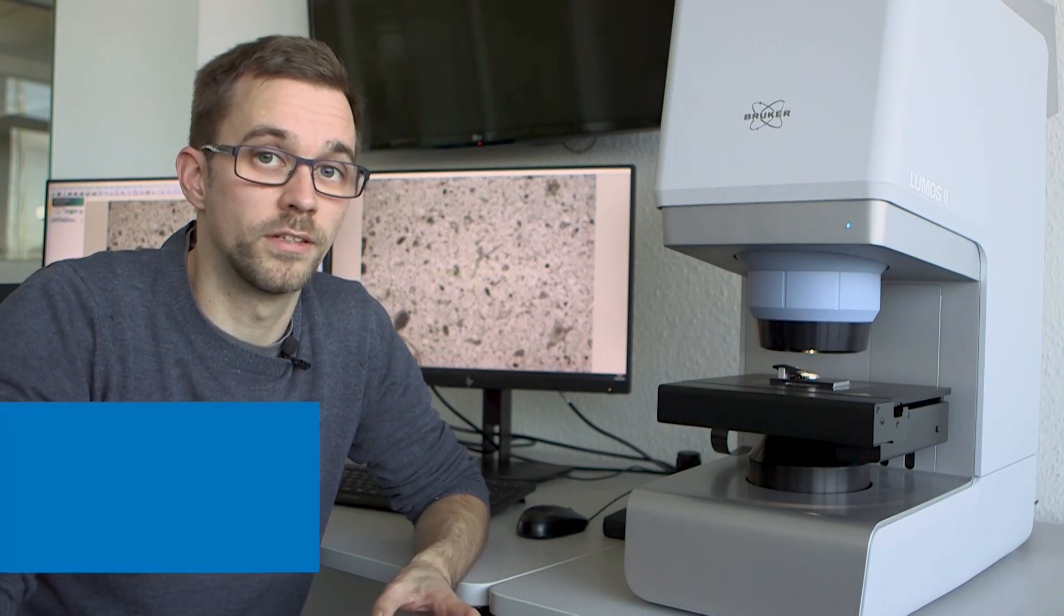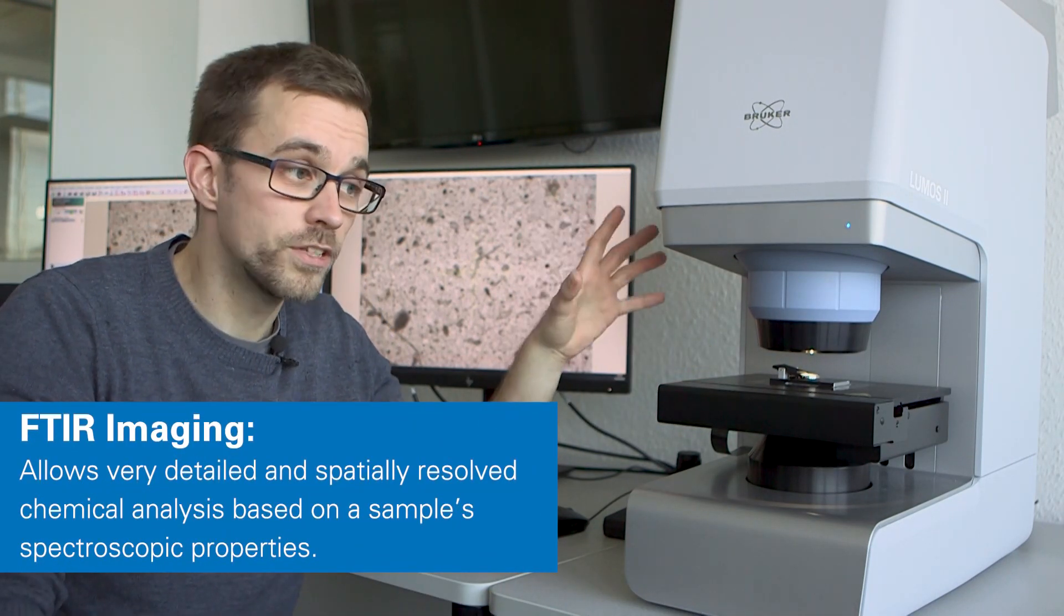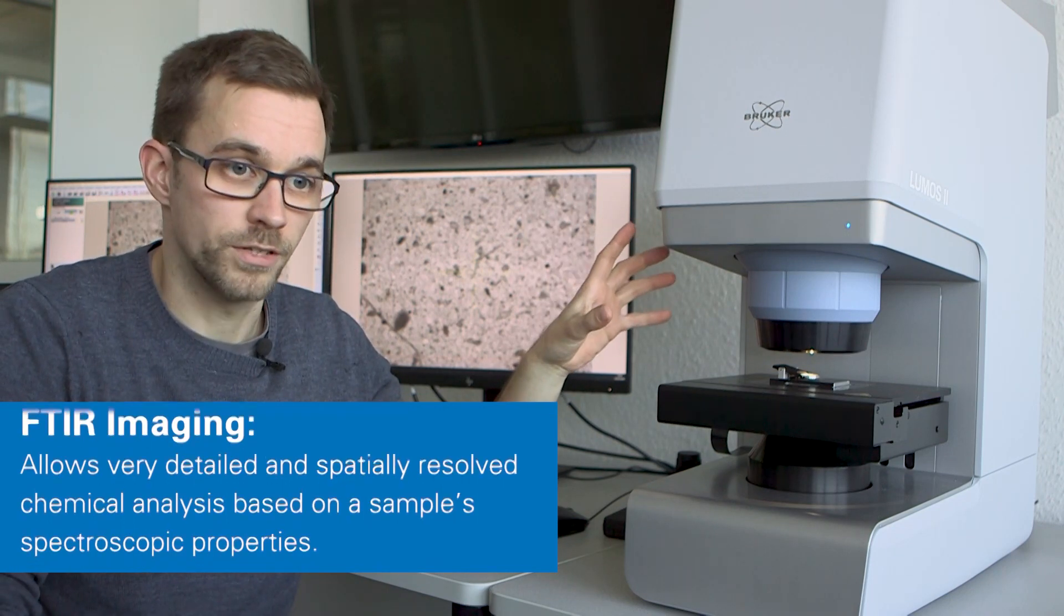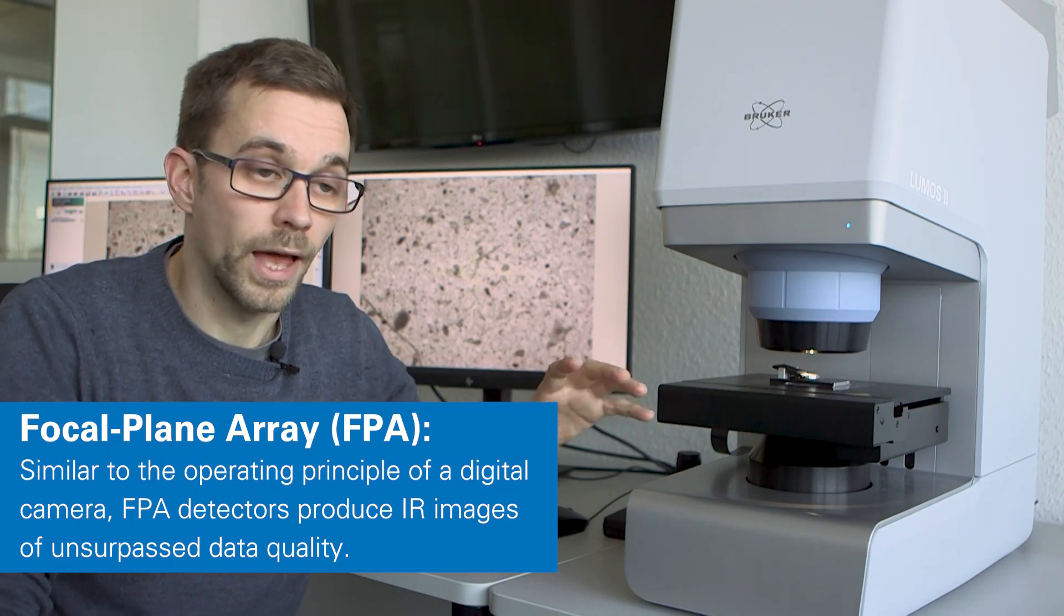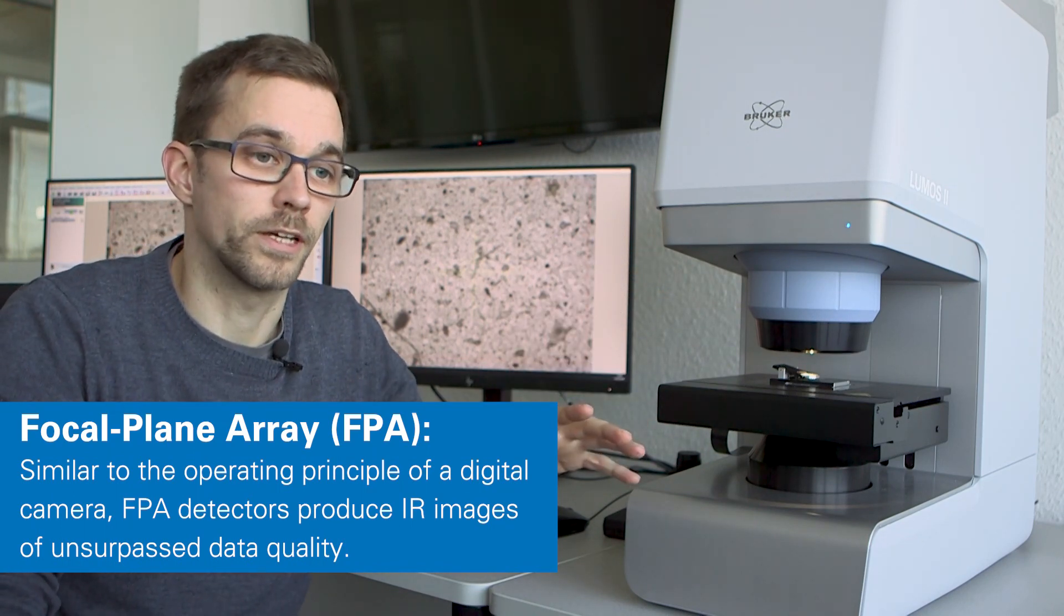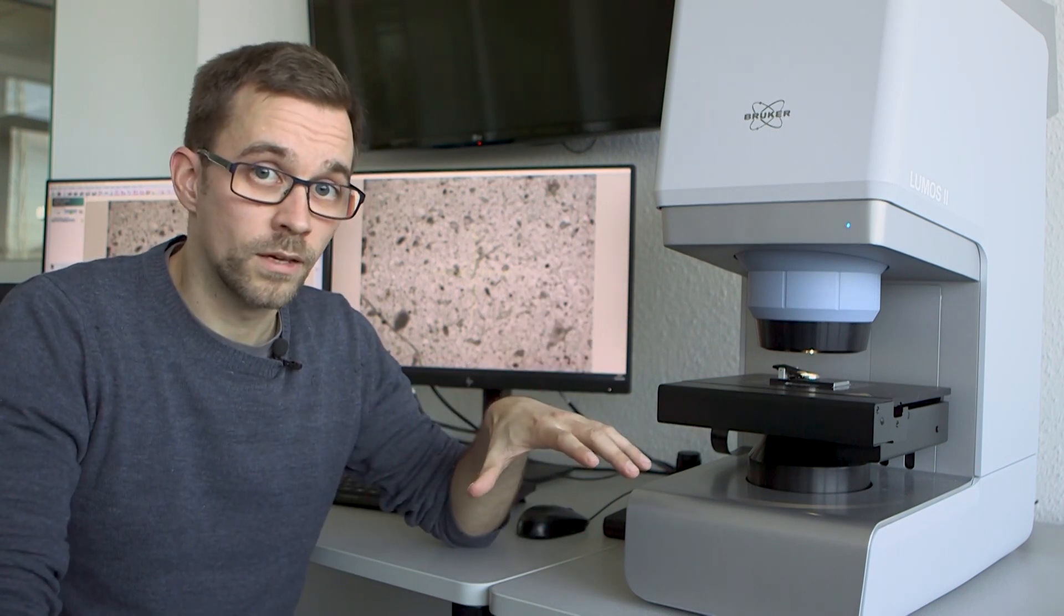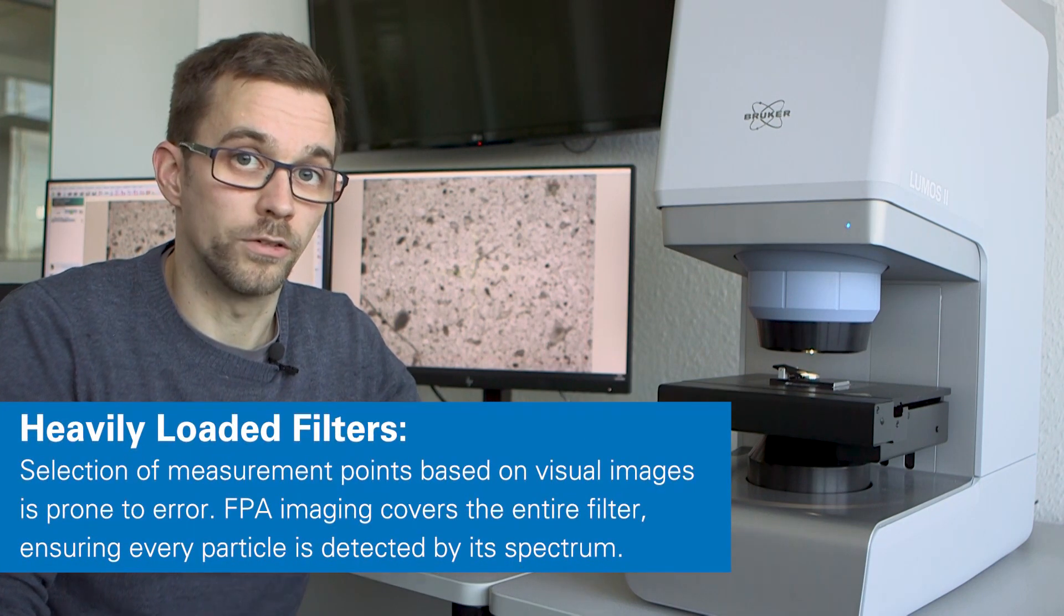We are ready for our imaging measurement. We already placed the sample on the stage of the Lumos II FTIR imaging microscope and we're going to use its focal plane array detector for the measurement. This way we have a far better spatial resolution and measurement speed than any line array detector could offer. We're going to measure the whole sample and this technique is especially suited for samples with a high load of particles.